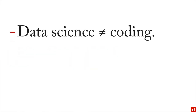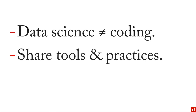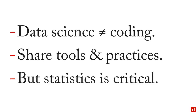In sum, data science is not equal to coding — they're different things. On the other hand, they share some of the tools and some practices, specifically when coding for data. There is one very big difference: statistical ability is one of the major separators between general purpose programming and data science programming.